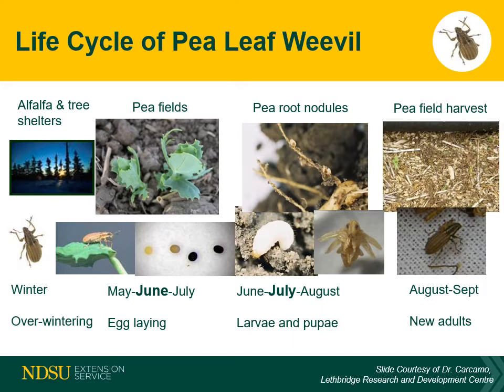Each female can lay between 1,000 to 3,000 eggs. After 2 to 3 weeks, eggs will hatch. Newly hatched larvae burrow into the soil to find and feed on nitrogen-fixing root nodules. Larvae develop through 5 instars, or growth stages, in 4 to 8 weeks.